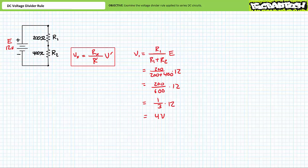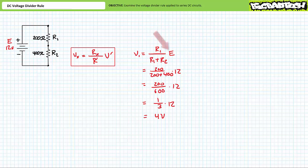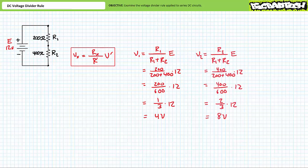Consider the DC voltage divider rule set up to solve for V1 in the first circuit. V1 equals R1 divided by (R1 plus R2) times supply voltage E. Substituting in our given values quickly and directly yields V1 to be one-third of 12 volts, or 4 volts, without the necessity of first determining total resistance nor current. A similar application of the voltage divider rule for V2 demonstrates V2 to be the remaining two-thirds of 12 volts, or 8 volts — again without the time-consuming necessity of first determining total resistance nor current.